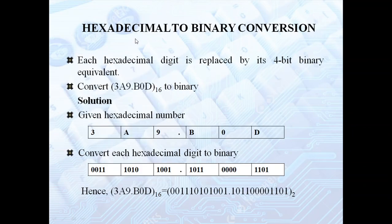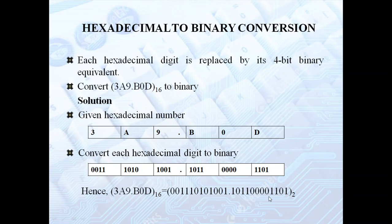Let us see how to convert hexadecimal to binary. Each hexadecimal digit is replaced by its 4-bit binary representation. Write each digit with its 4-bit binary equivalent using positional weights 2 power 0, 2 power 1, 2 power 2, 2 power 3. For example, 2 power 0 is 1 and 2 power 1 is 2, so 2 plus 1 equals 3. Likewise, write all numbers and that gives the final binary answer.